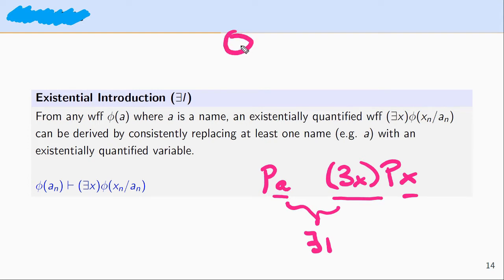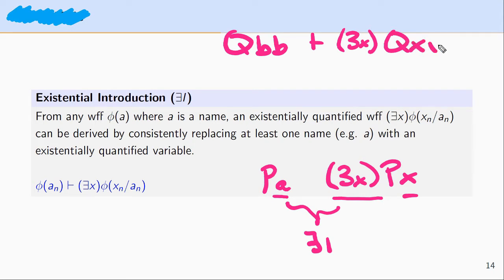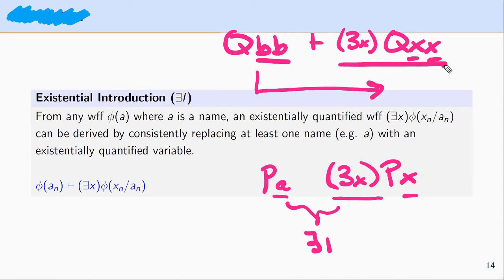Similarly, if we had QBB and made use of existential introduction on this formula, we would replace at least one of the names with a bound variable. We're going to replace each B with an X, and that X is going to be existentially quantified. The idea is we're reasoning from a particular formula to an existentially quantified expression, replacing each of the names with an existentially quantified variable.